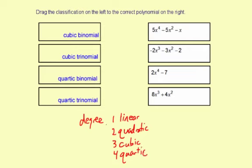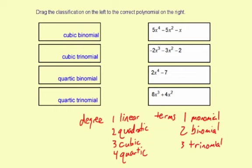The other way to classify is by the number of terms. If you have one term, it's called a monomial. Two terms is a binomial. Three terms is called a trinomial. And four or more terms is just called a polynomial.